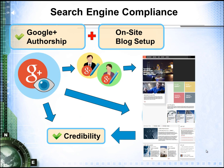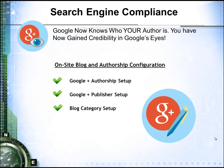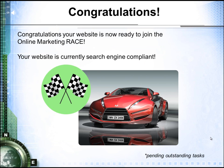We make sure that your website blog is set up properly, and we make sure that authorship is established on your blog. We want to make sure that whenever things are published on your website, Google knows who's publishing that, and we accomplish that through setting up Google Authorship and what we call Publishership on your website. It just adds more credibility in Google's eyes of your website.